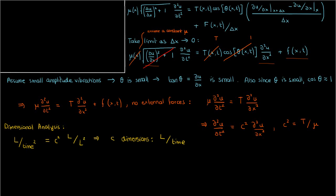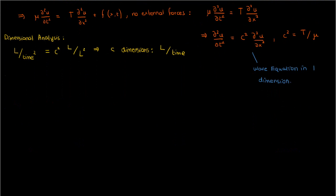It has dimensions of speed. Interestingly enough, you'll see later that c is in fact the wave speed. This result, this PDE, is called the wave equation in one dimension. And now that we've derived the wave equation, we can go ahead and discuss some of the intuition behind it, of the nature of the physical phenomena that the equation describes.